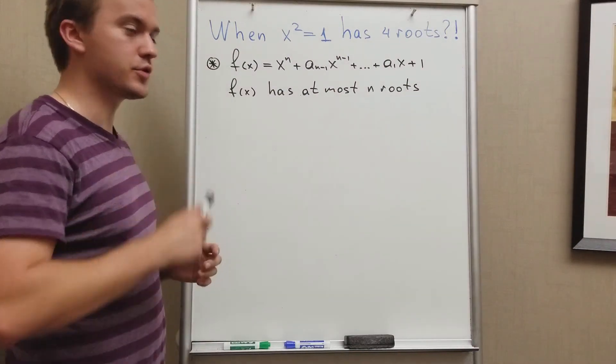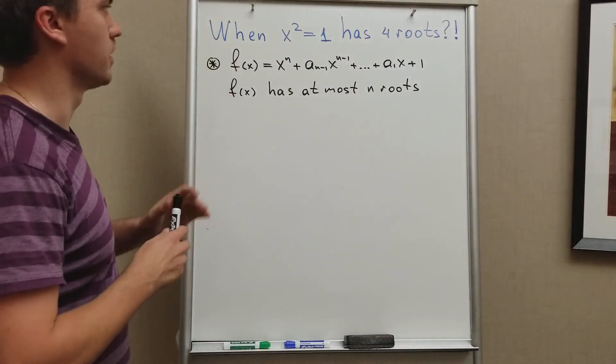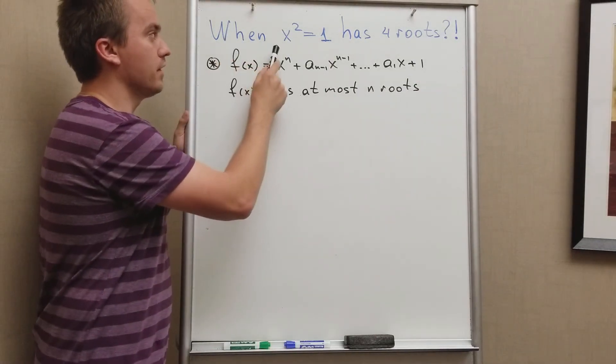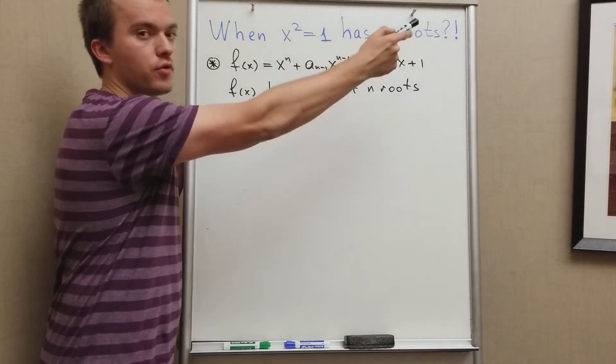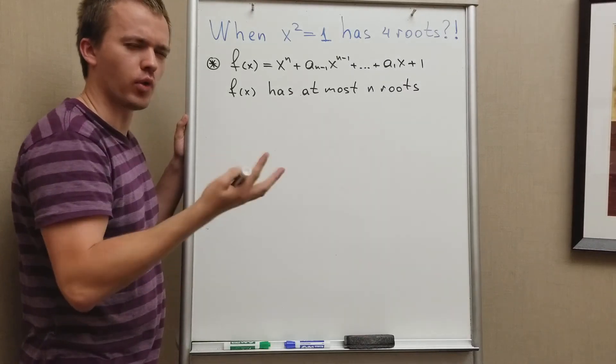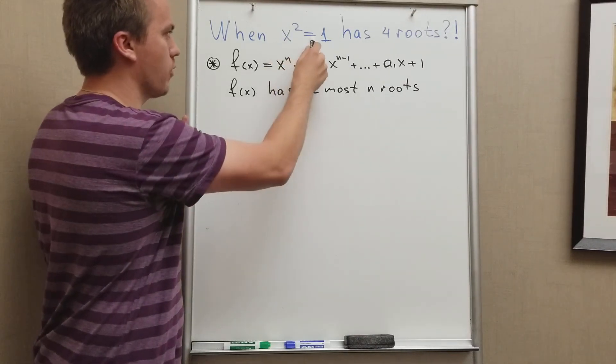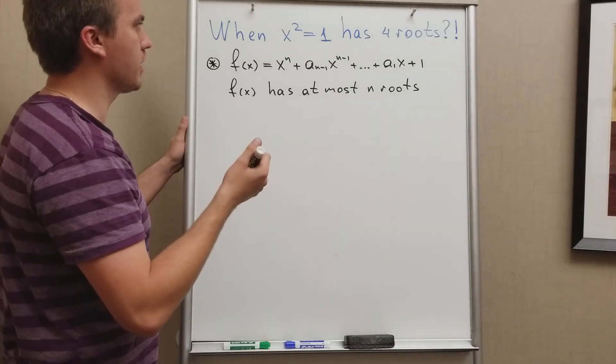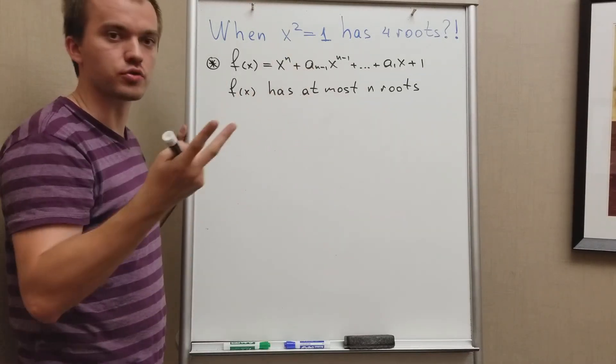Hello guys, in this video I want to discuss this question. When x squared equals one has four roots, and you're asking what? What does it mean like x squared equals one has four roots? I have always thought that this equation has only two roots.